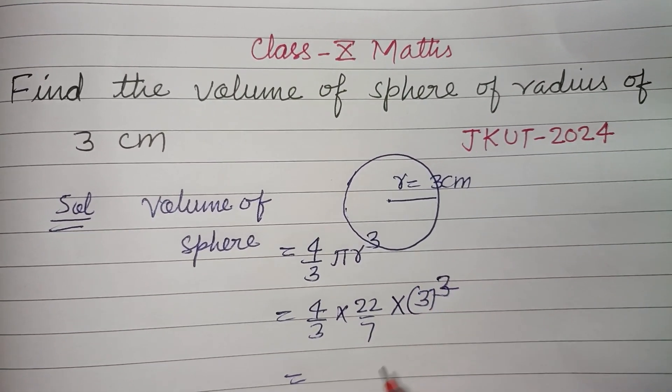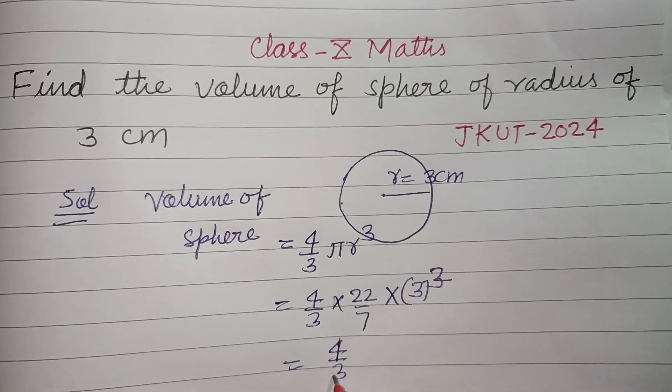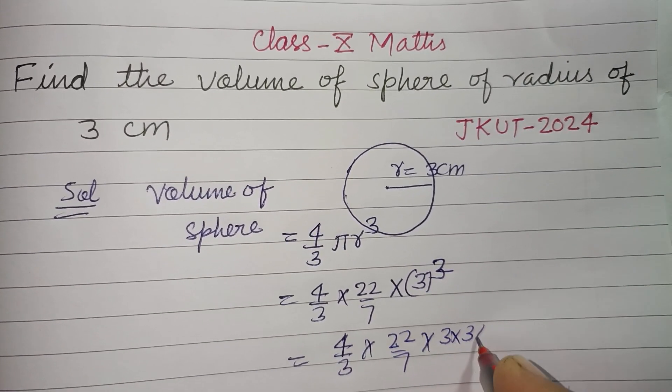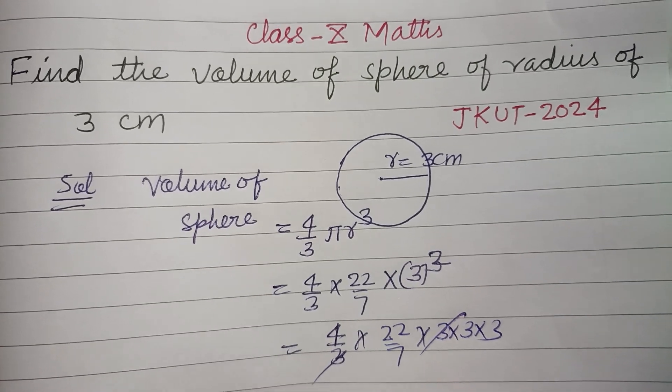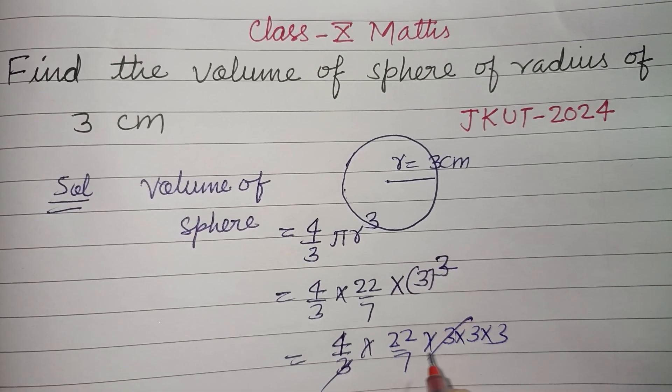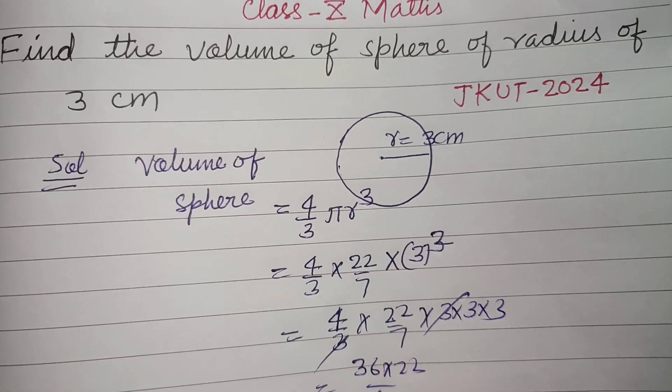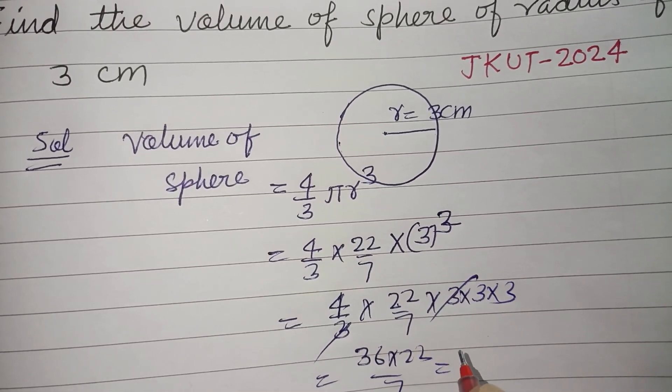So 4 by 3, 22 over 7, 3 into 3 into 3. One 3 is cancelled here. 3 times 3 is 9, 9 times 4 is 36. So 36 into 22 by 7.